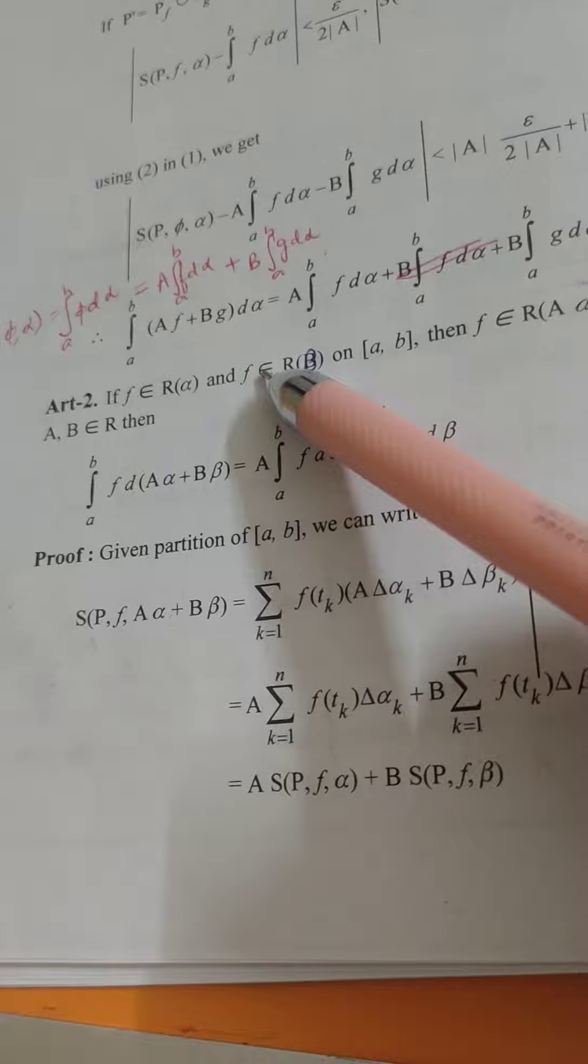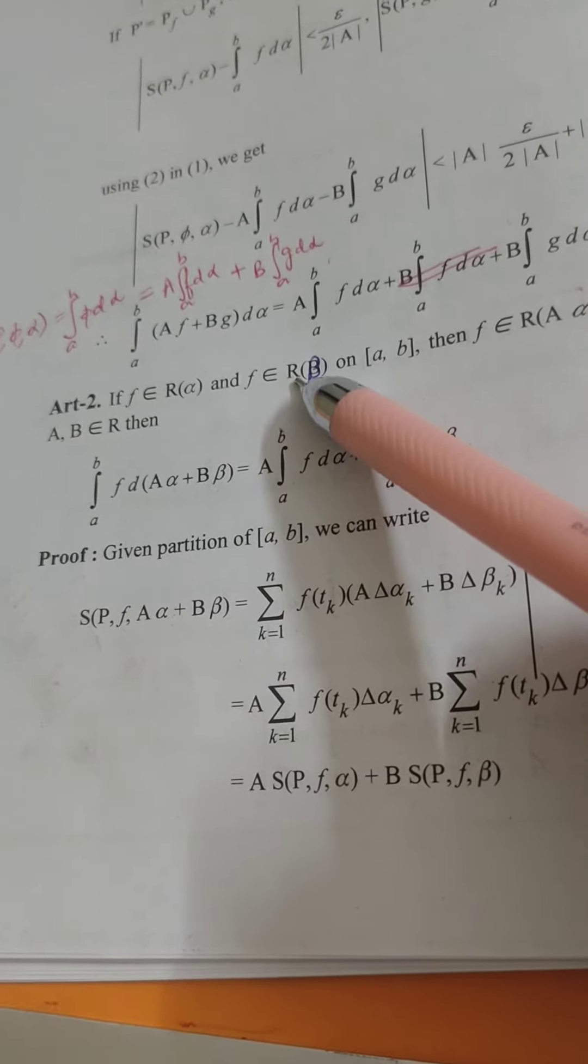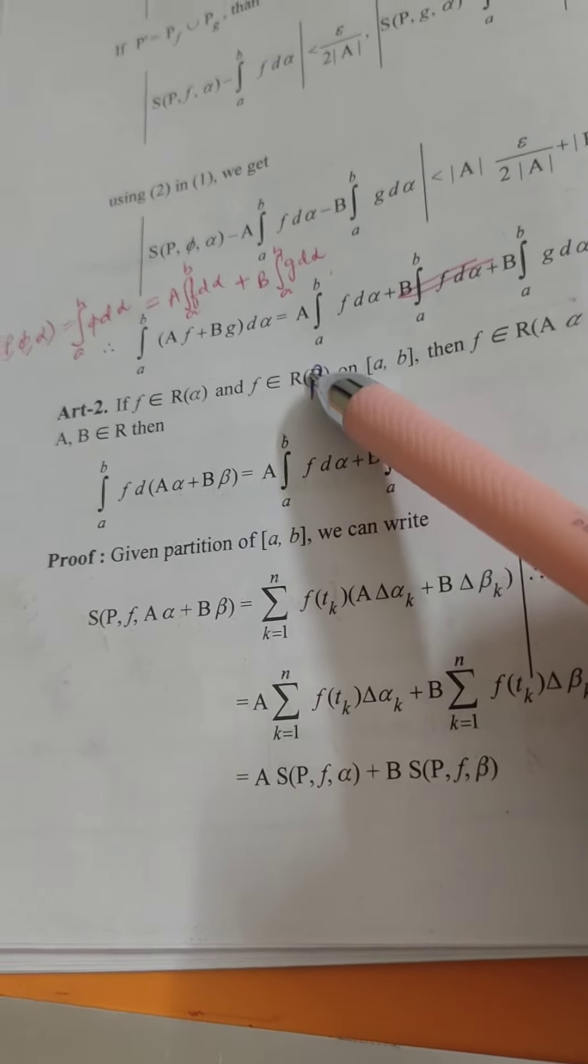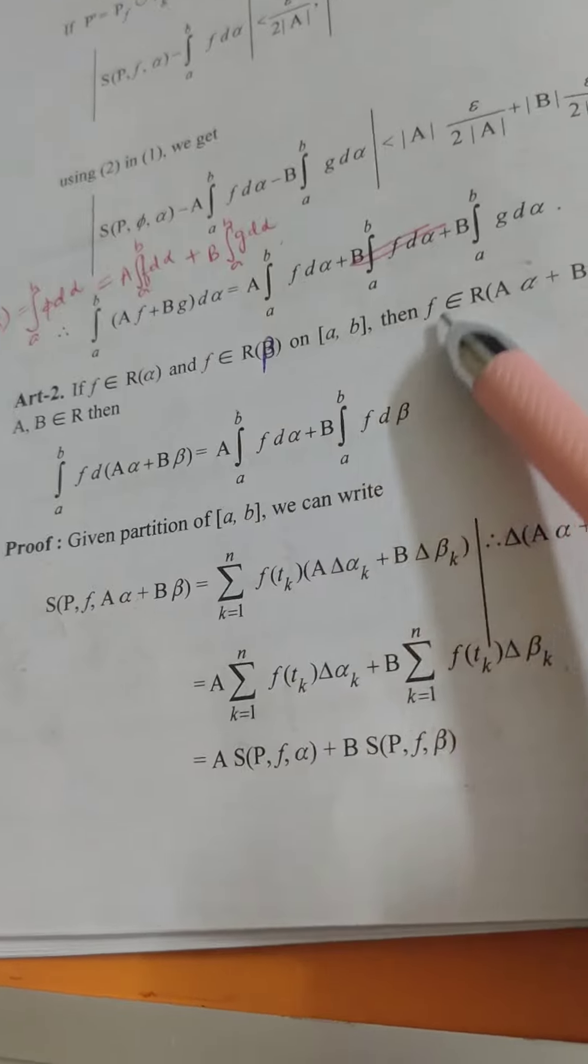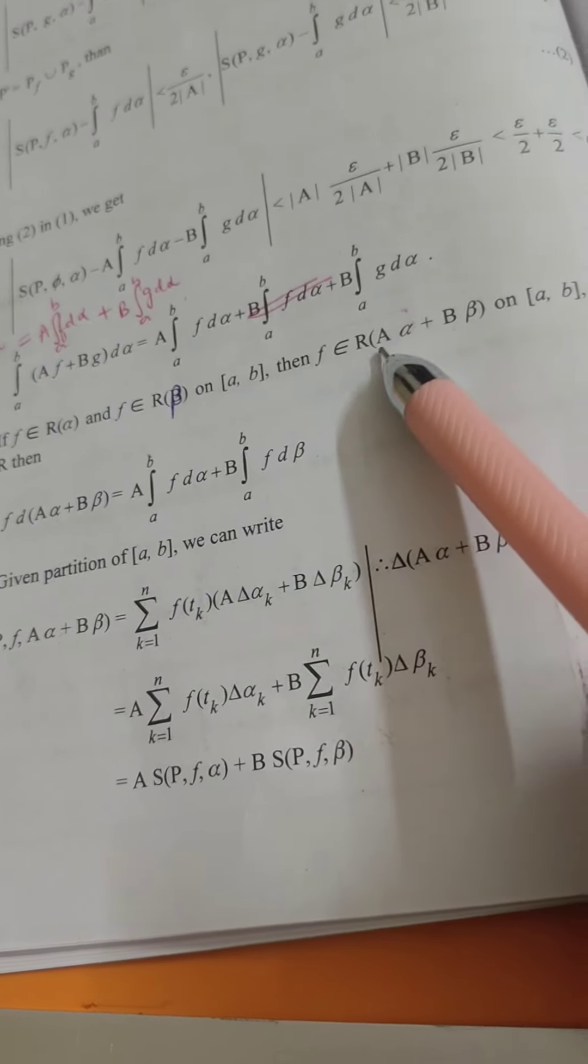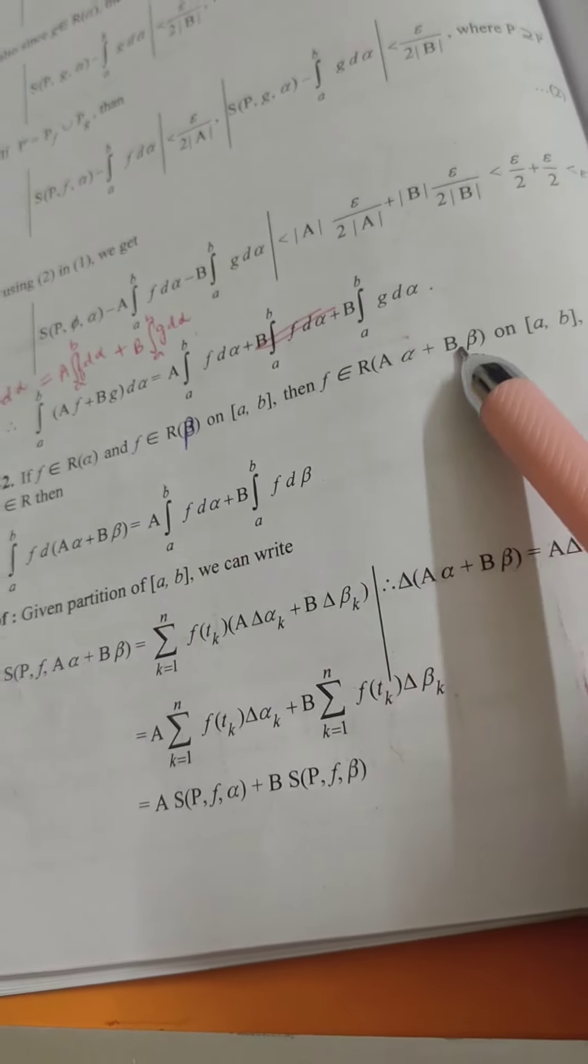Yaha par le rahe hai same function f but it is Riemann-Stieltjes integrable with respect to function beta. So aapko show karna hai f belongs to R(a alpha plus b beta).